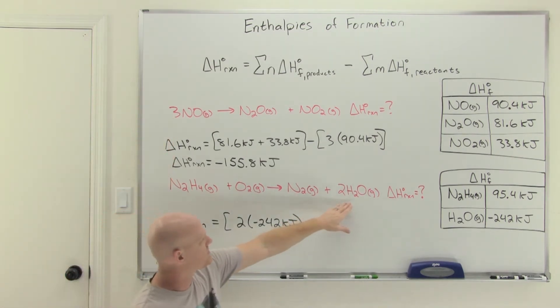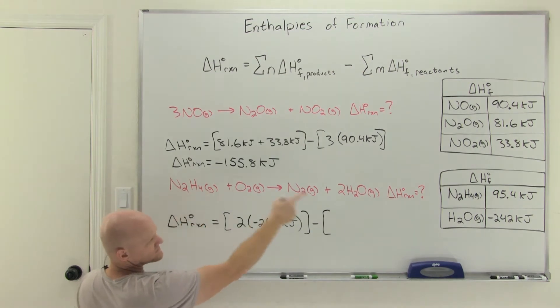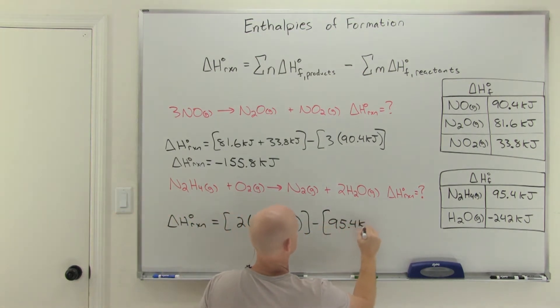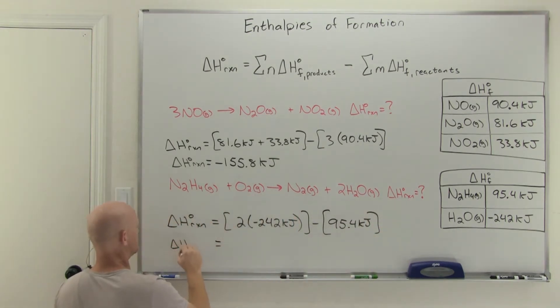We'll just do the water then, two times negative 242. That is all my products, and then I'll subtract out the sum of all my reactants. Nothing for O2, but one mole of N2H4 would be 95.4. That'll be the crux of our whole calculation here. Once again, we'll pull out our handy-dandy calculator. So two times negative 242 minus 95.4 is going to get us negative 579.4.